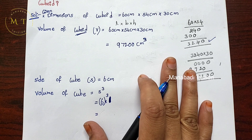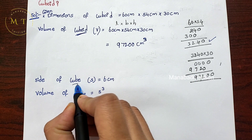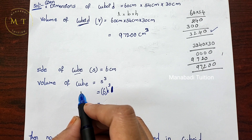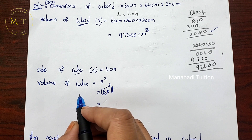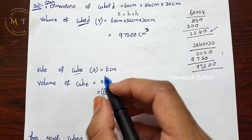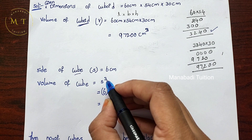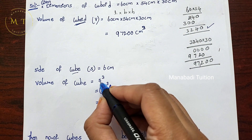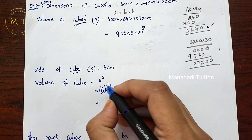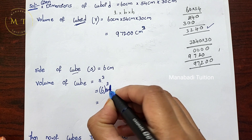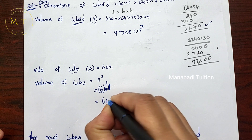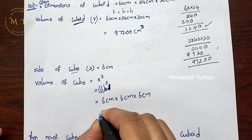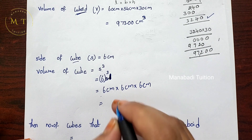We insert the small cube into the cuboid. The volume of the small cube is 216 cubic cm. To find how many small cubes fit, we divide the volume of the cuboid by the volume of the small cube: 97,200 ÷ 216.